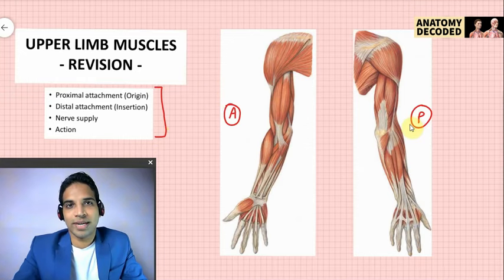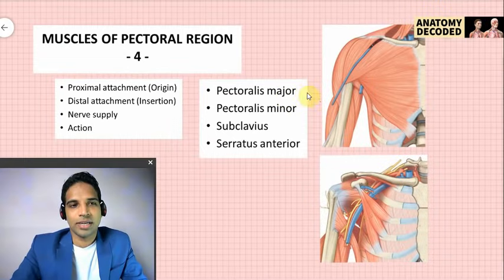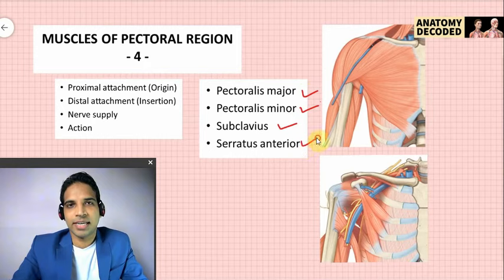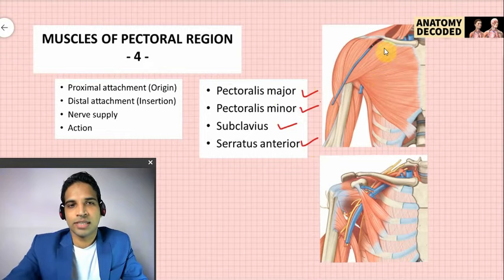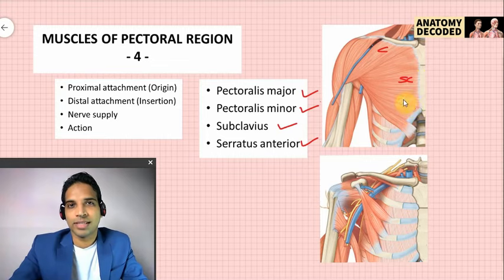Let us start with the muscles of the pectoral region first. There are four muscles: pectoralis major, pectoralis minor, subclavius, and serratus anterior. Pectoralis major has two heads of origin — the clavicular head, which arises from the anterior aspect of the medial half of the clavicle, and the sternocostal head, which arises from the anterior aspect of the sternum, costal cartilages, and the aponeurosis of the external oblique muscle.